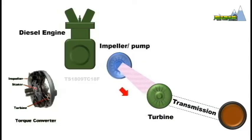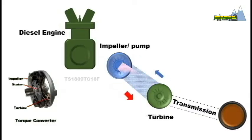As oil hits the turbine blades, the turbine starts rotating. This makes the transmission system rotate and the wheels of the vehicle move.